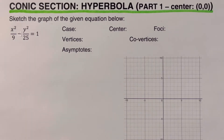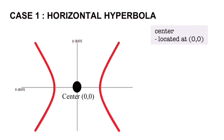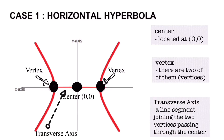Let's have a review on the parts and the two cases of a hyperbola. This hyperbola is called the horizontal hyperbola because the graph, which is in red, is touching the horizontal axis. The first part is the center, located at zero zero or at the point of origin. Another part is the vertex — there are two of them, called vertices. The transverse axis is the line that connects the two vertices passing through the center.